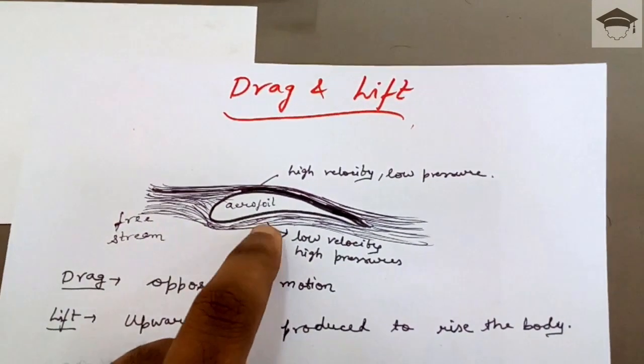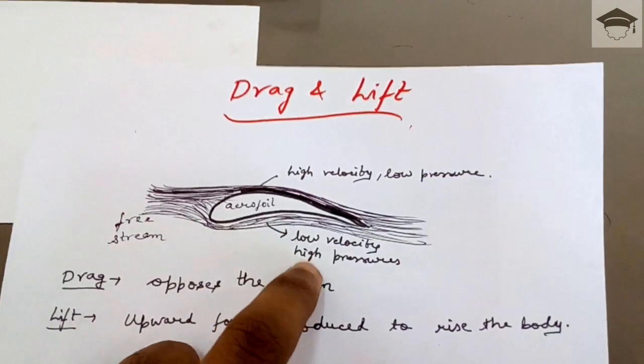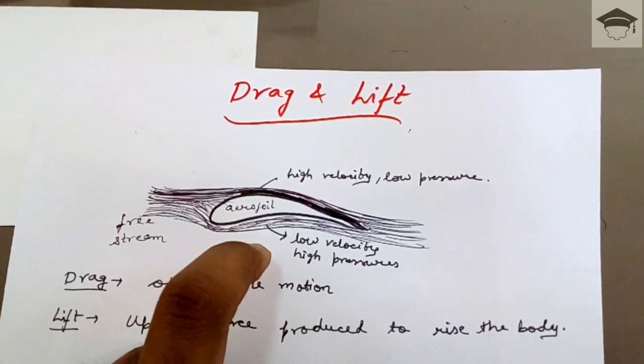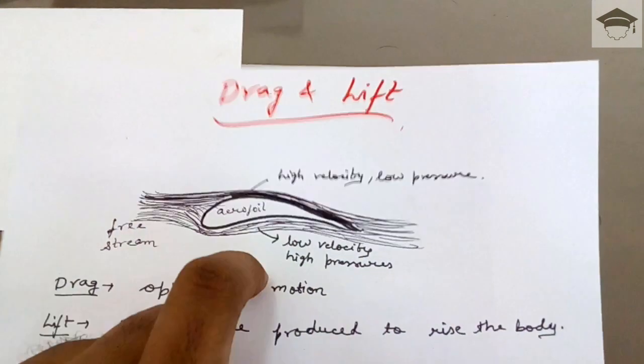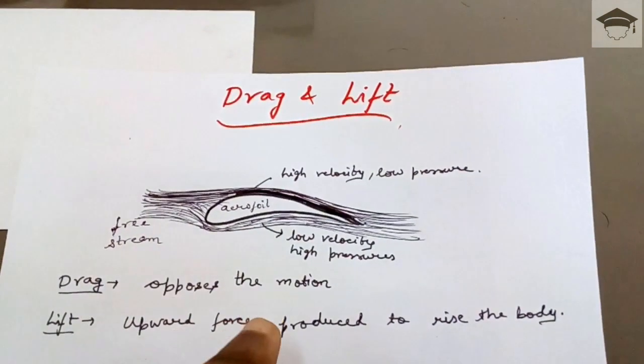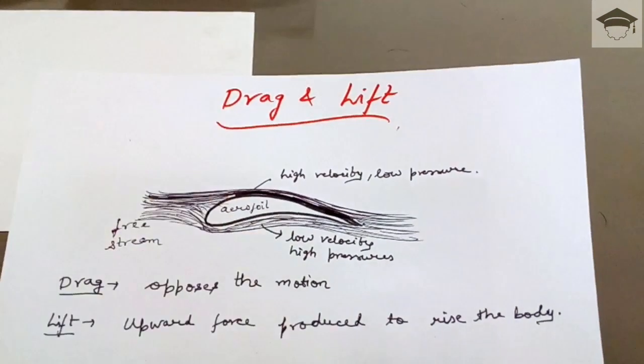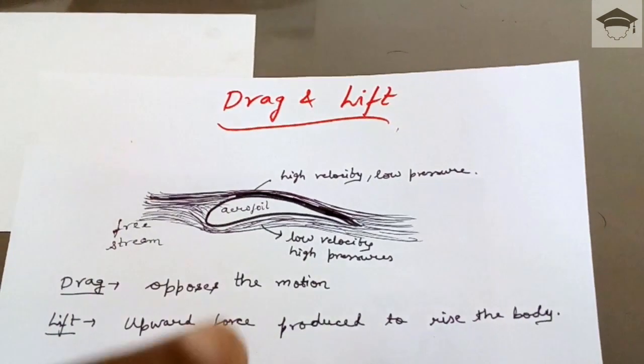Now pressure will be high from down to up and pressure will be low from top to bottom. So the net pressure will be acting from bottom to top. So the pressure into the wing area, that is the area on which the pressure acts into the pressure, that will give the drag force.